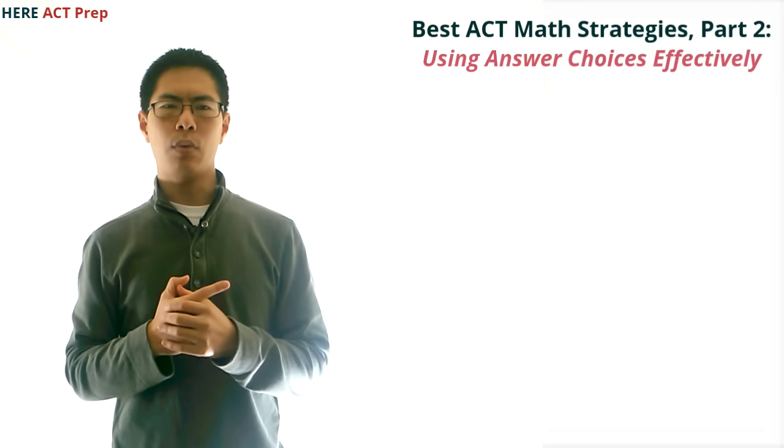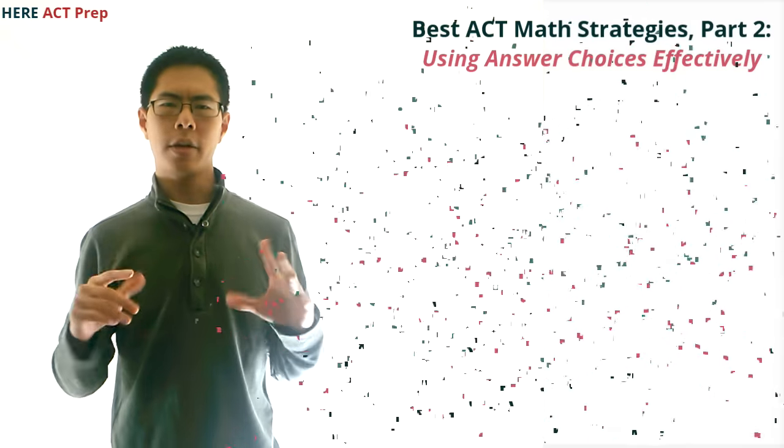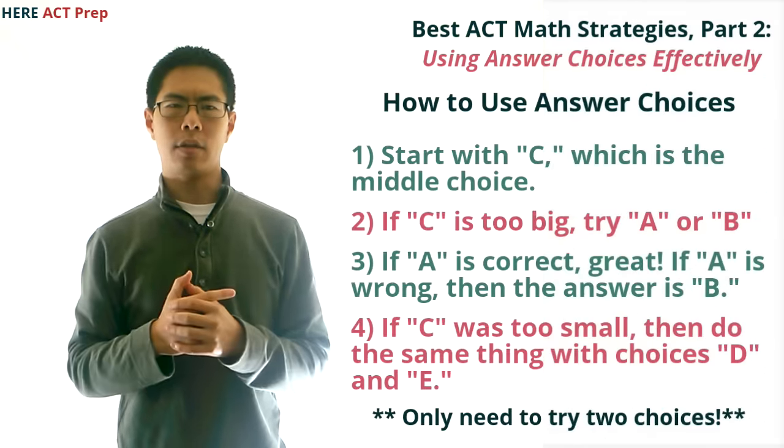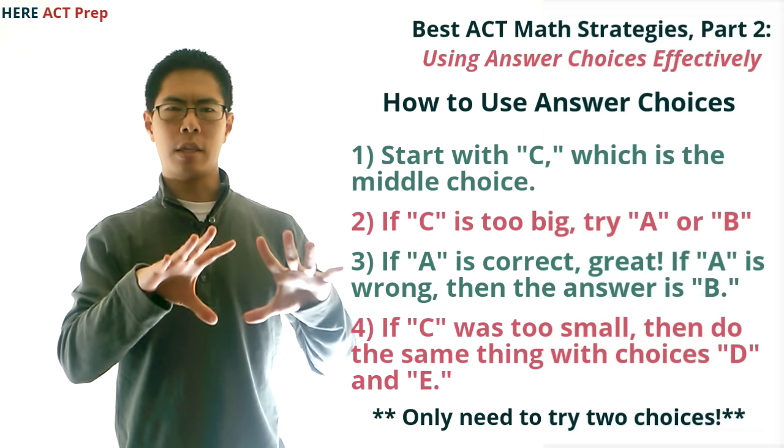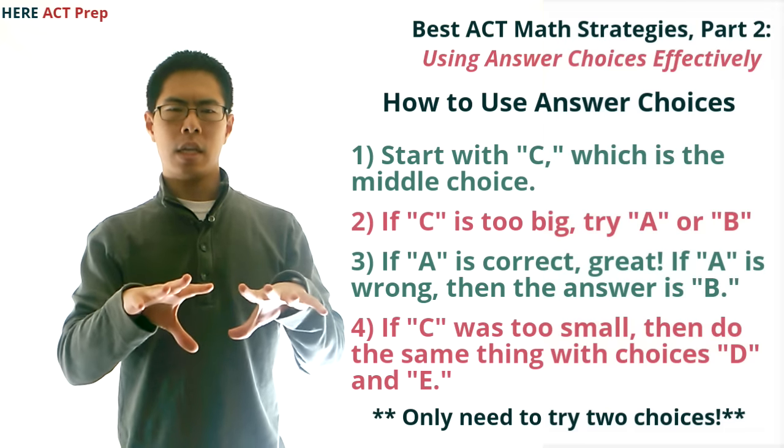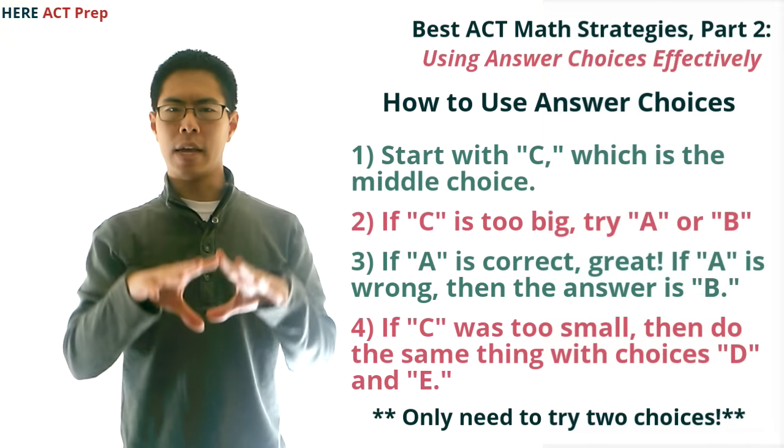Now, let's talk about how and when to use the answer choices. Regarding the how, the most efficient way to use the answer choices is to start with C, since it will always be the choice that's right in the middle. If C ends up being wrong, then we only need to pick one more choice to find the right answer.